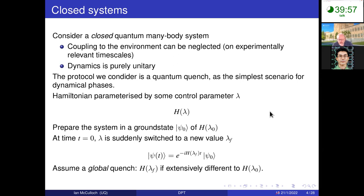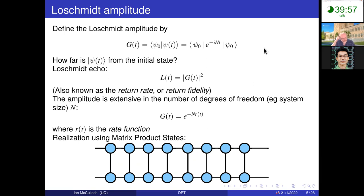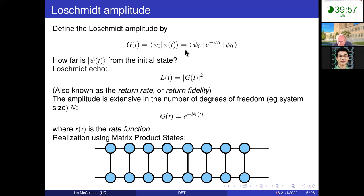Our amplitude — the quantity analogous to our partition function — is the wave function overlap between our initial state and our time-evolved state. This goes by many names: the Loschmidt echo is also used, as is the return rate or return fidelity. This amplitude is extensive in the number of degrees of freedom, i.e., the system size — obvious for those who have worked with infinite tensor networks — as it's defined by some kind of transfer matrix eigenvalue.